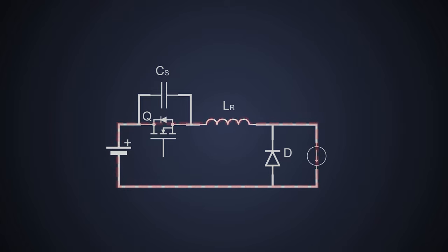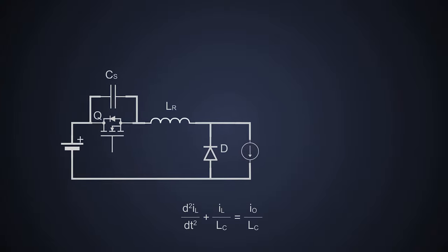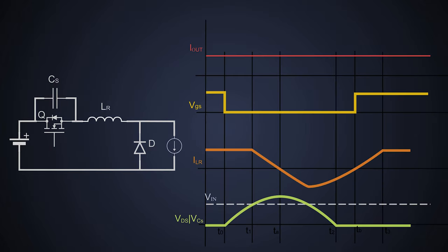To understand the working of zero voltage switching resonant buck converter, we need to divide its operation into four different modes. Just as we saw in the last video of zero current switching, we will ignore all the boring math part of the differentiations and integrations and will focus on the actual circuit working as well as its voltage and current graphs for easy understanding.